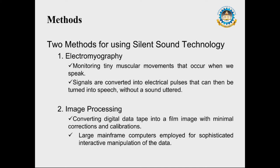For silent sound technology, two methods are used. The first is electromyography, which is the process of monitoring tiny muscular movements that occur when we speak. Signals are converted into electrical pulses that can then be turned into speech without a sound being uttered.